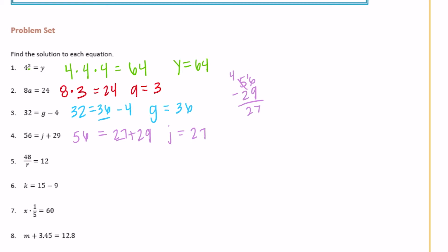So here j is equal to 27. And if you want to check, 27 plus 29 should be equal to 56. Number 5: 48 over r is equal to 12, or 48 divided by r is equal to 12. Or 48 divided by what is equal to 12? 48 divided by 4 is equal to 12, so r is equal to 4.